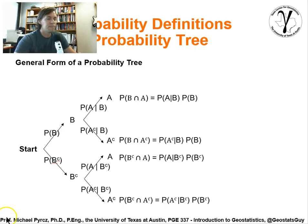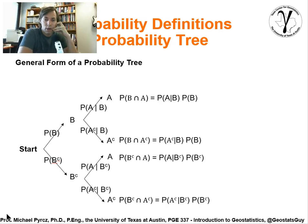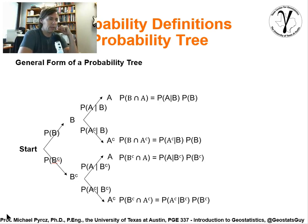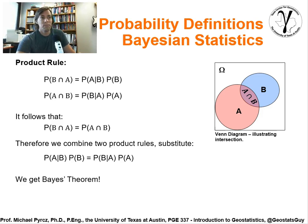Last time we left off with probability, talking about more of a frequentist type of approach. We suggested that probability is really about counting relative frequencies of different types of events and taking the ratio of those events relative to the total number of outcomes. That was pretty straightforward, but we built on it to get into marginal, conditional, and joint probabilities. Now we'll make a jump into more of a Bayesian approach, which builds from the simple axioms we learned from the frequentist approach.